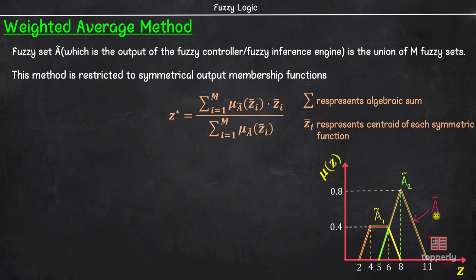As an example, consider an output fuzzy set A comprising of two parts A1 and A2. Here, the centroid of fuzzy set A1 can be easily identified as 5 as A1 is a symmetrical trapezoid function. So, z̄_A1 is equal to 5 and μ_A(5) is equal to 0.4.